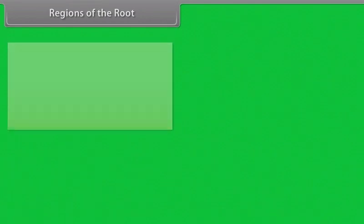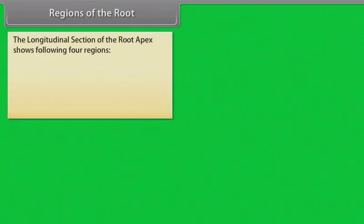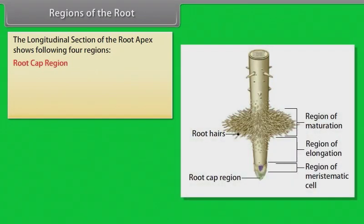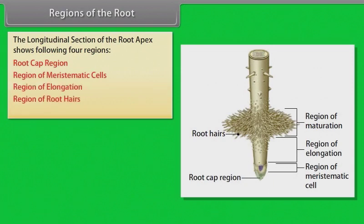Regions of the root: The longitudinal section of the root apex shows the following four regions: root cap region, region of meristematic cells, region of elongation, region of root hairs, and region of maturation.